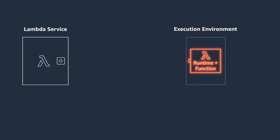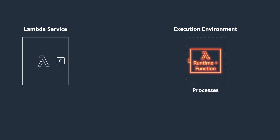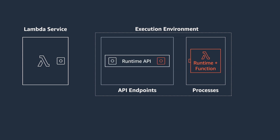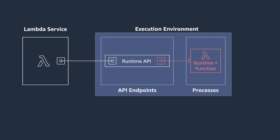Let's zoom in a bit. The main process within the Lambda environment is the runtime, which runs your function code. The runtime process uses the runtime API to communicate with the Lambda service. It requests invocation events from the Lambda service and then invokes the function handler. After the function code is done, it returns the response to the runtime API and asks for the next invocation event. If there are no events ready to be processed, the Lambda service freezes the environment.